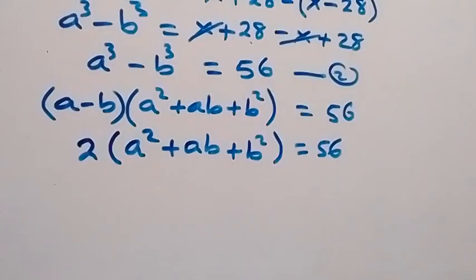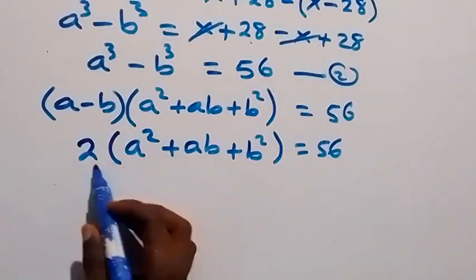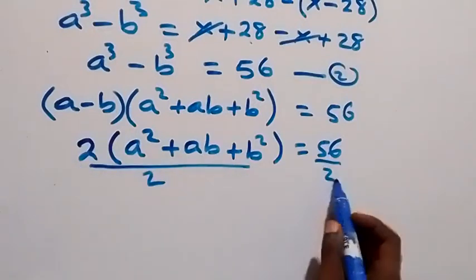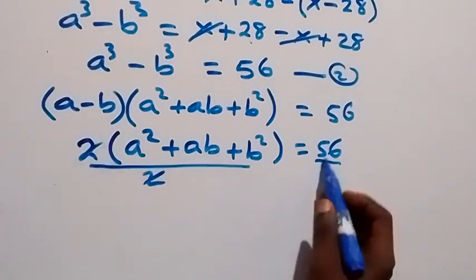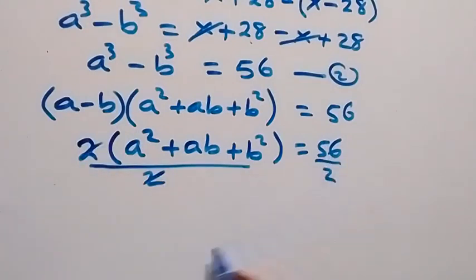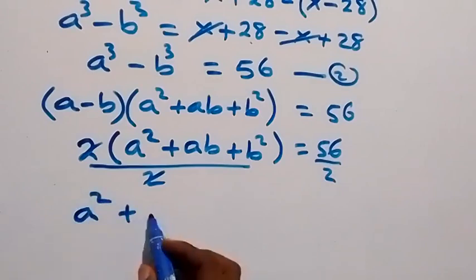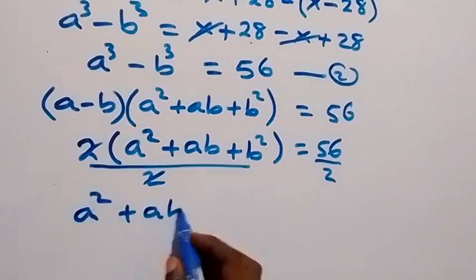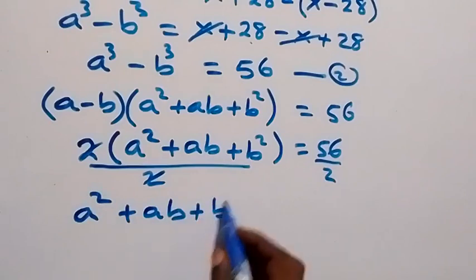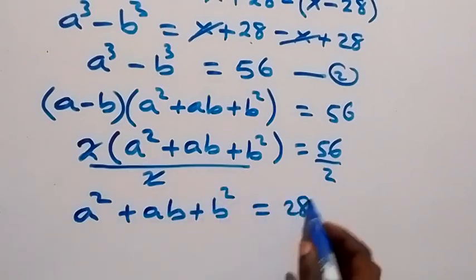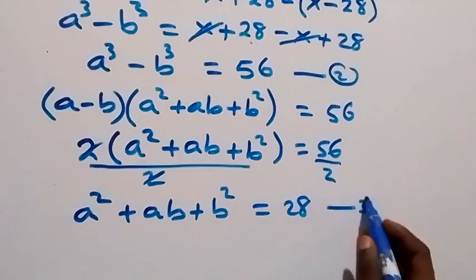Dividing both sides by 2, we cancel out and 56 divided by 2 gives 28. So a² + ab + b² equals 28, and let's label this as equation 3.